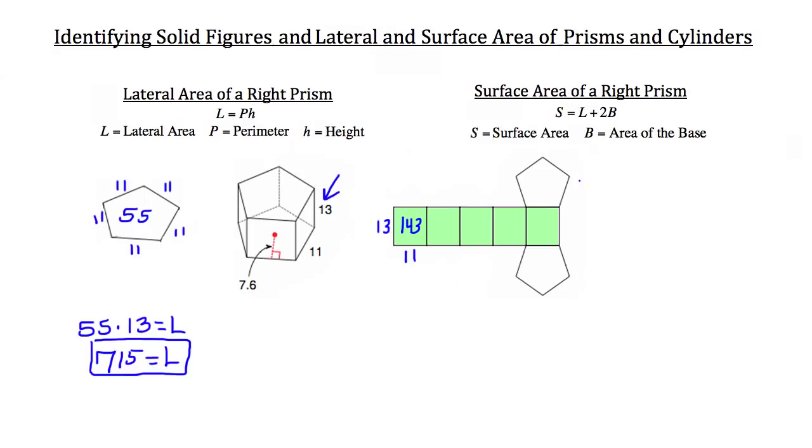Now to calculate the surface area of this figure, we want to take the lateral area and add two times the area of the base. Now remember, the base of our prism were these pentagon shapes on top and bottom of the prism. So let's refer back to that pentagon that we drew in on the left and found that the perimeter was 55. We're going to go ahead and use that part of the diagram to calculate the area of that pentagon now.